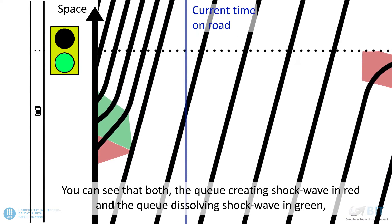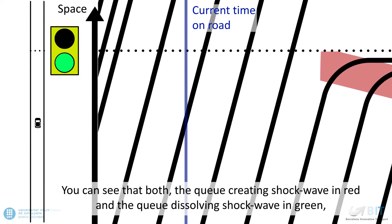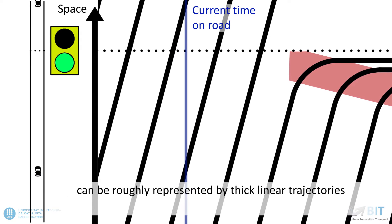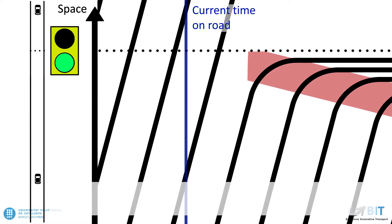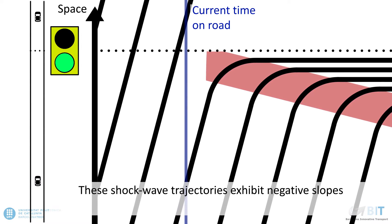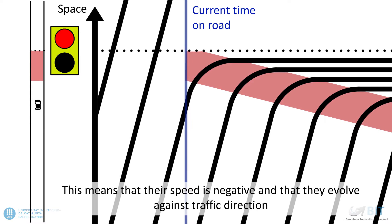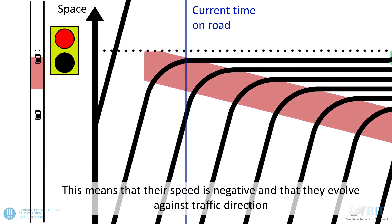You can see that both the queue-creating shock wave in red and the queue-dissolving shock wave in green can be roughly represented by linear trajectories. These shock wave trajectories exhibit negative slope. This means that their speed is negative and that they evolve against traffic direction.